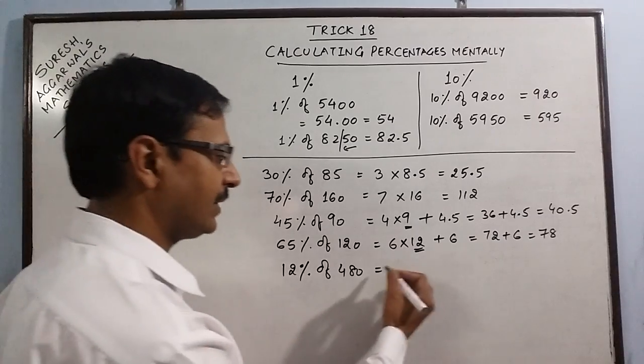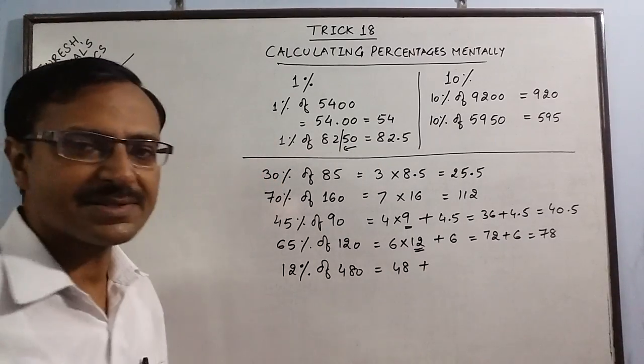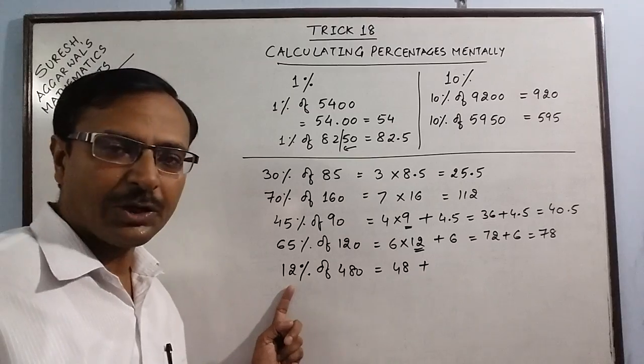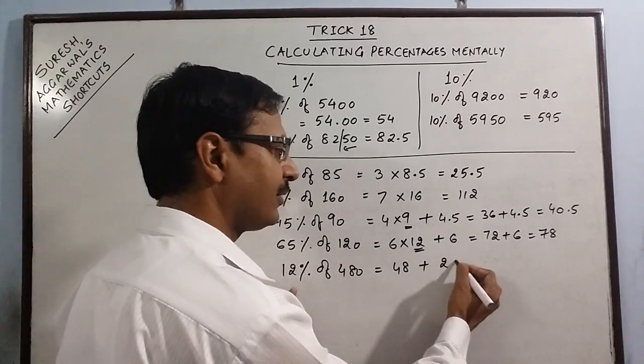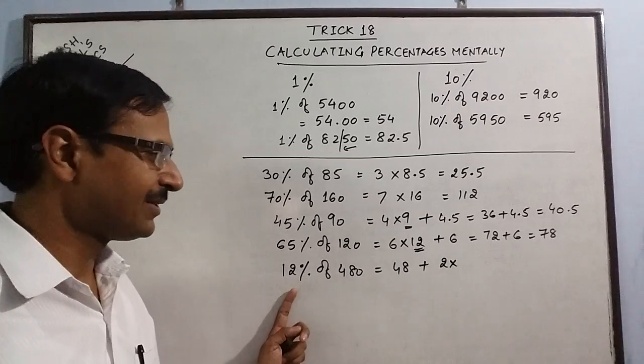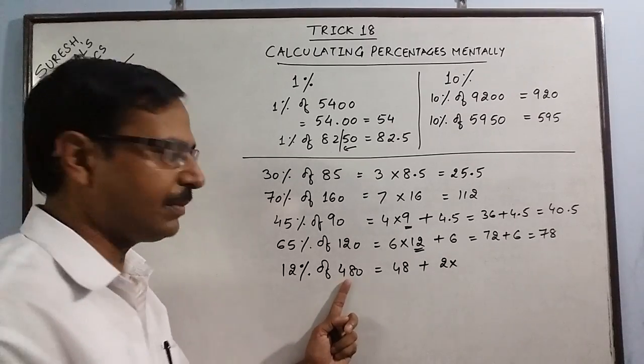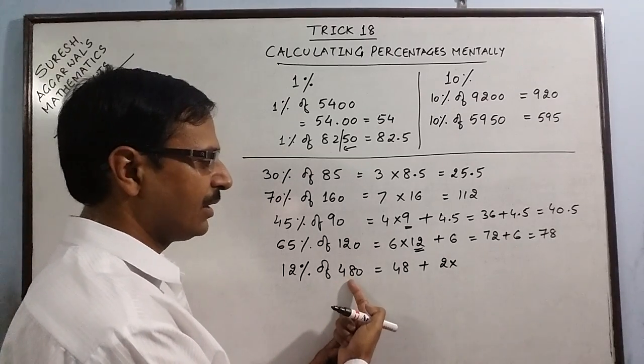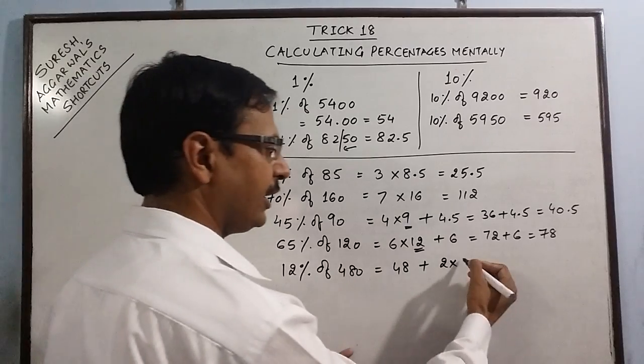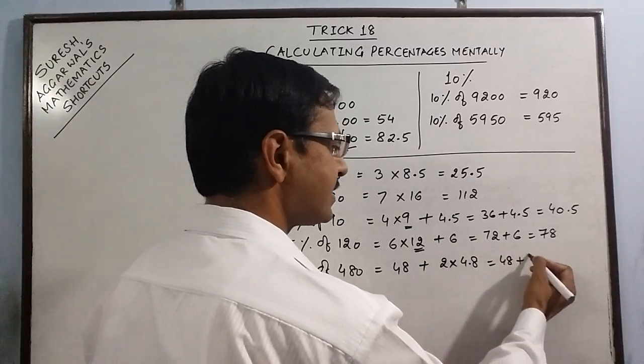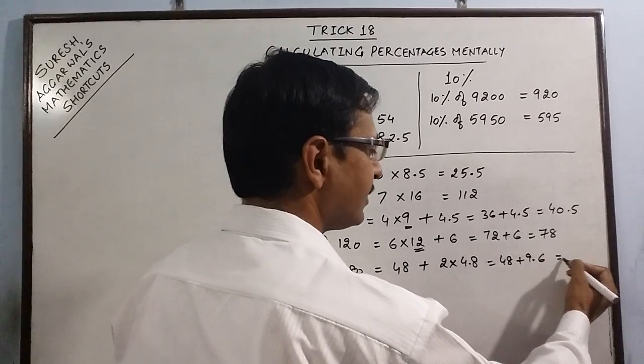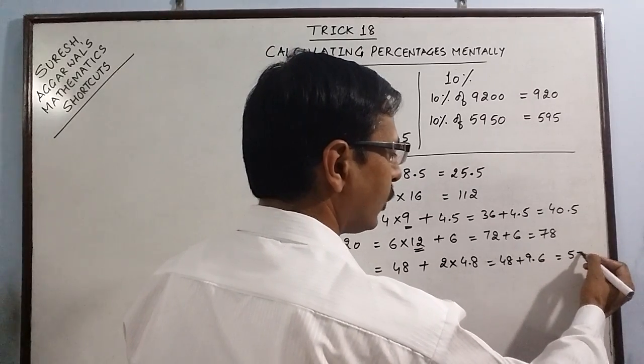that is 48, plus I have remaining 2%. Then 2% is twice of 1%, and 1% is obtained by putting a decimal 2 digits from the right, 4.8. So your answer is 48 plus 9.6. This is 57.6.